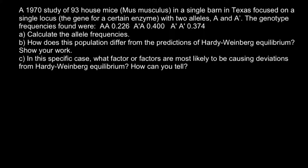Here's a problem. A 1970 study of 93 house mice in a single barn in Texas focused on a single locus — the gene for a certain enzyme with two alleles A and A'. The genotype frequencies were given. First, we have to calculate the allele frequencies. Second, how does this population differ from the predictions of Hardy-Weinberg equilibrium? And third, in this specific case, what factor or factors are most likely to be causing deviations from Hardy-Weinberg equilibrium, and how can you tell?